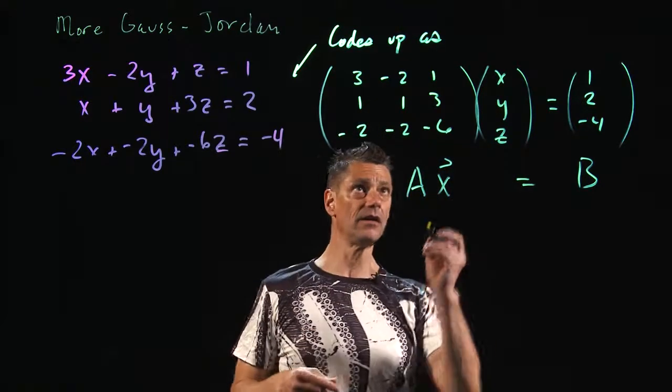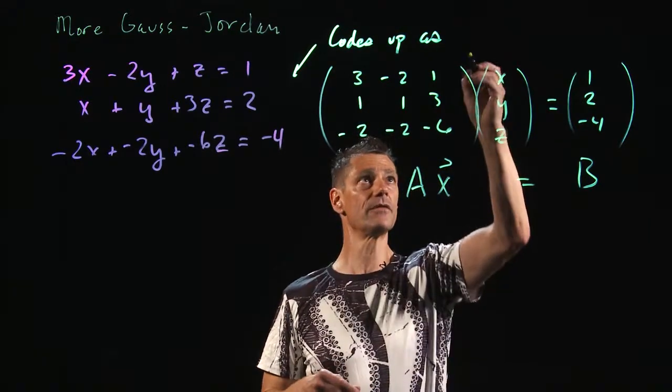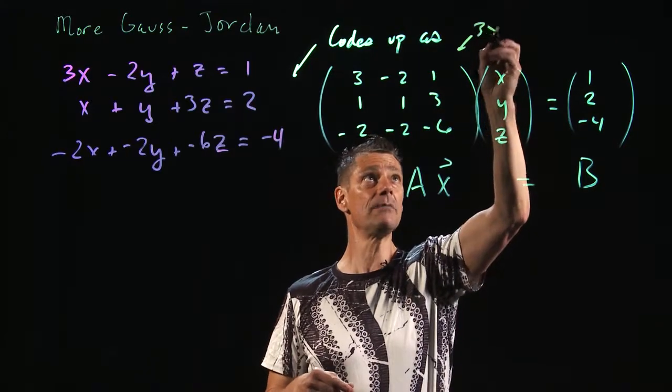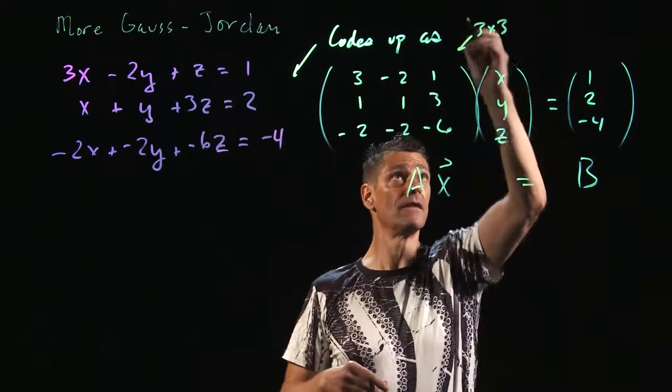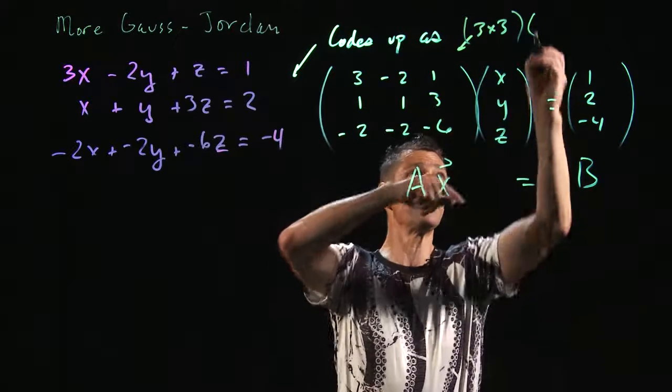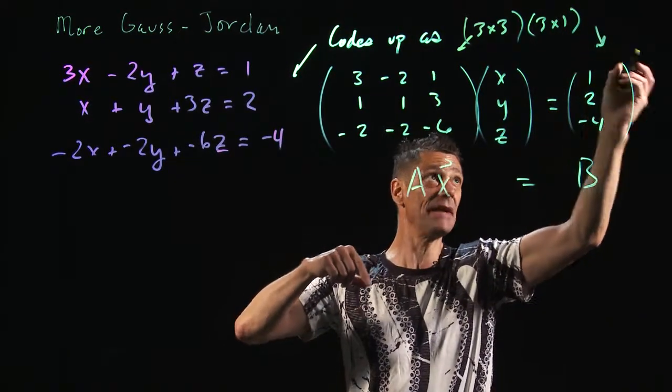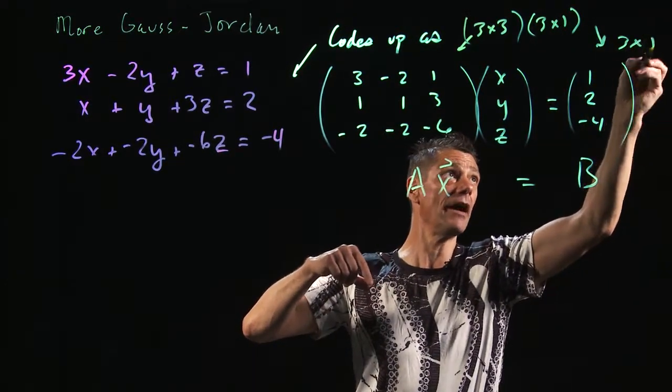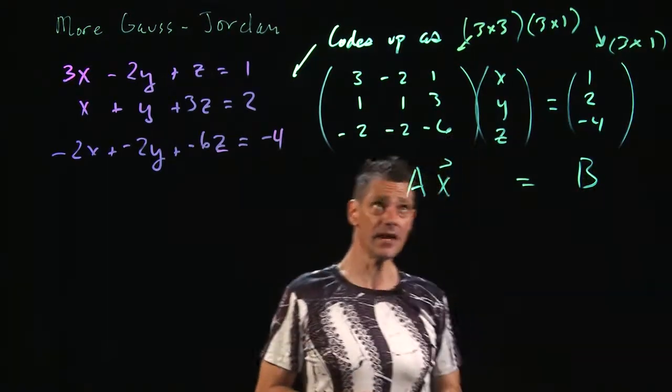Notice what we have here. This is a 3 by 3, and we're multiplying it by a 3 by 1. So of course, it's going to spit out a 3 by 1. So in some sense, and we haven't really talked about vectors...